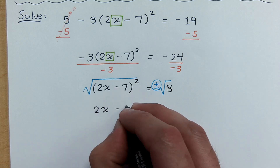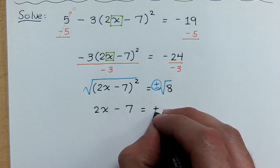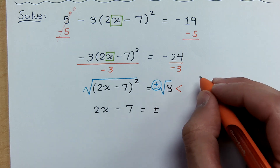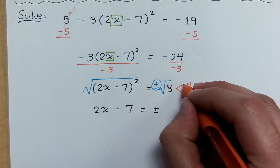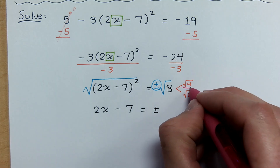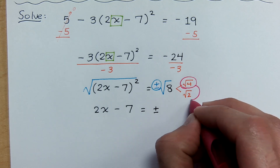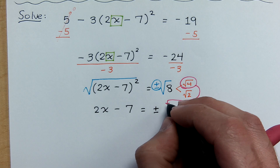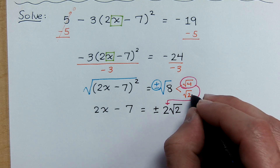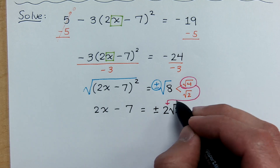On the left side of the equation, we have 2X minus 7. On the right side is plus or minus. 8 is not a perfect square, but it does contain a factor that is. We split this up as 4 and 2. Remember that when you are simplifying this, you are taking the square root of each of these factors. This guy is my perfect square. The square root of 4 is what I'm writing out in front. The 2 stays inside the radical — so the square root of 2 is that guy, and the square root of 4 gives me 2.